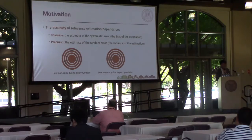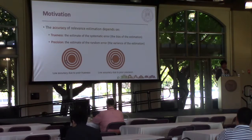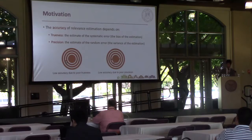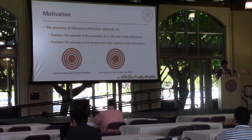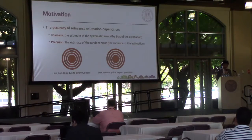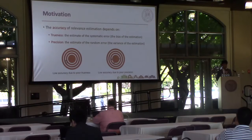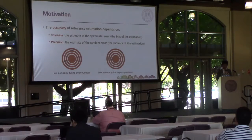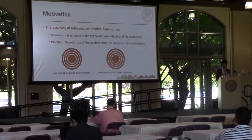In order to improve the performance of these downstream tasks, we need to ensure that the relevance estimation itself is accurate. Generally speaking, the accuracy of estimation depends on two factors: first is trueness and second is precision. Trueness is the estimate of the systematic bias and precision is the estimate of the random error. Previous studies on click models focused on reducing the systematic bias and improving the trueness of relevance estimation by experimenting with different kinds of user behavior assumptions. However, few studies have investigated the precision and reliability of the relevance estimation given by the click models.